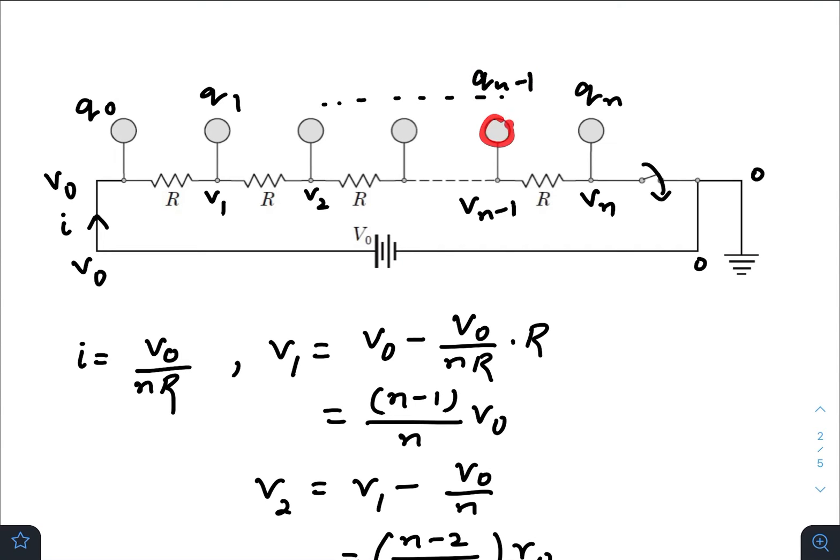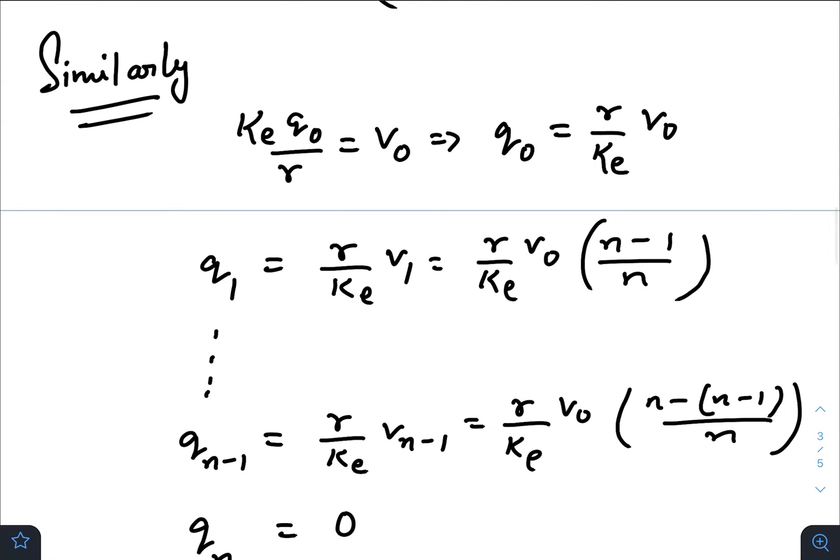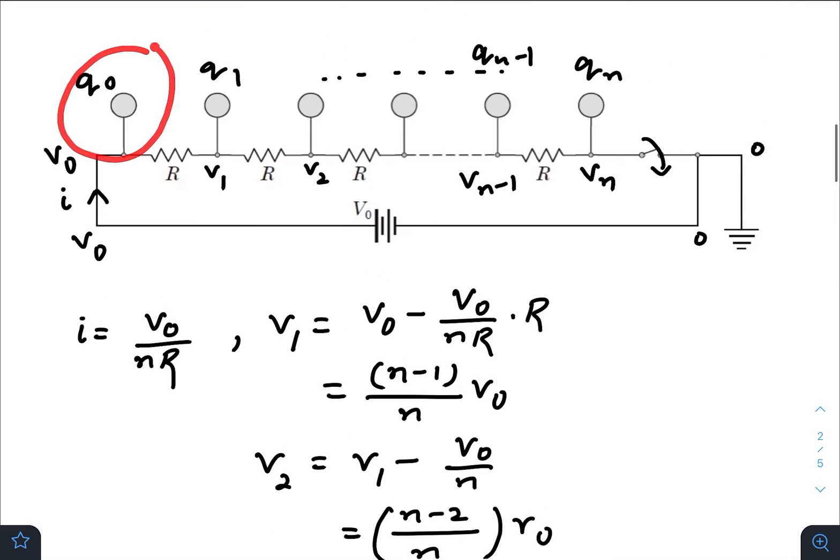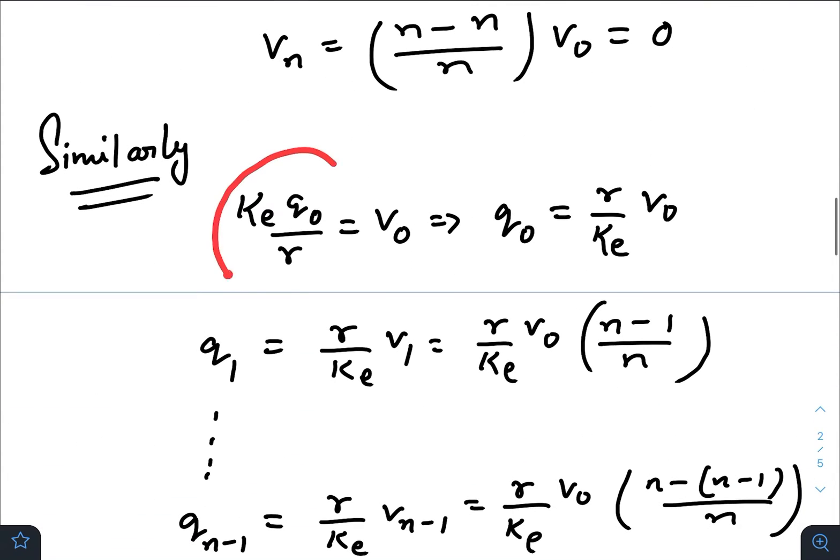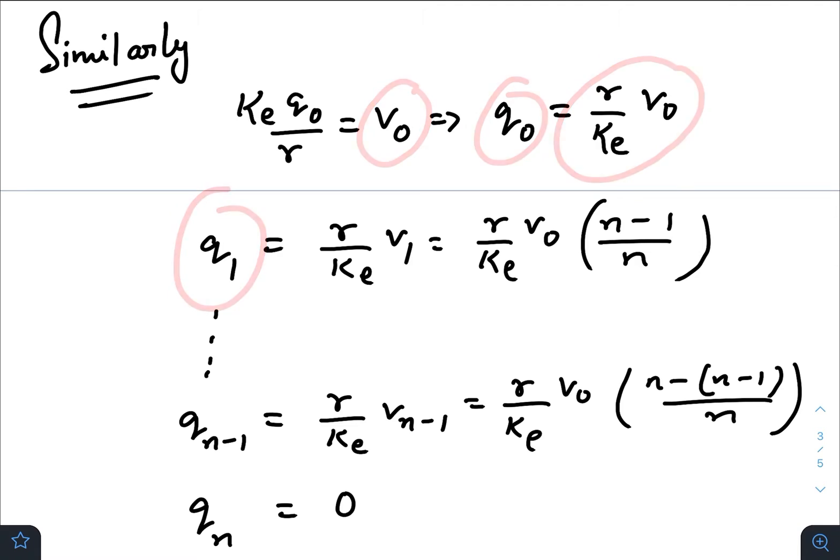If we consider q₀ to be the charge on the leftmost sphere, then ke·q₀/r equals V₀, so q₀ is (r/ke)V₀. Similarly, q₁ would be (r/ke)V₁, which equals (r/ke)·((n-1)/n)V₀.